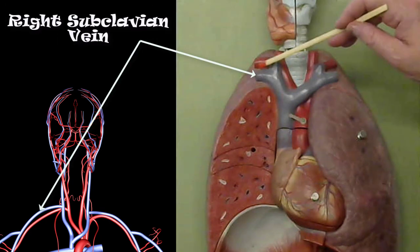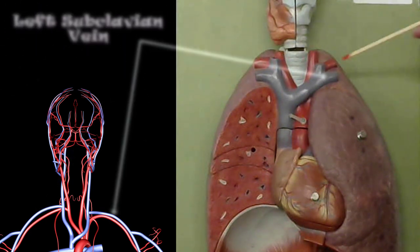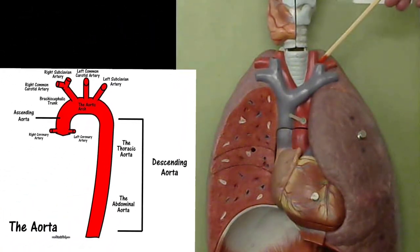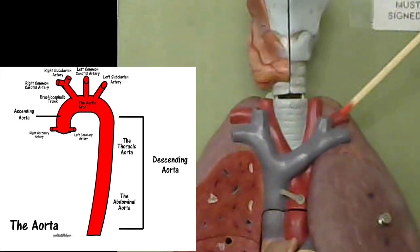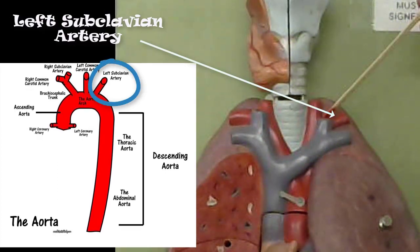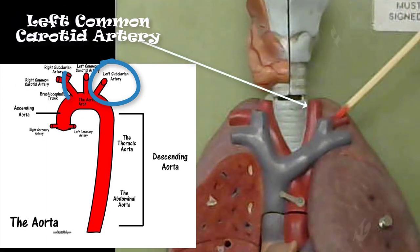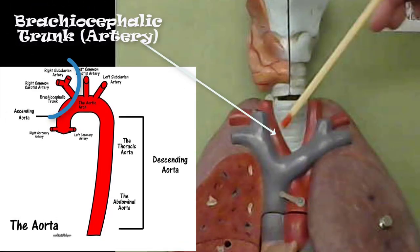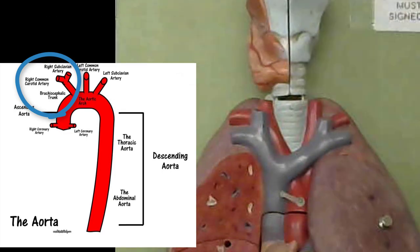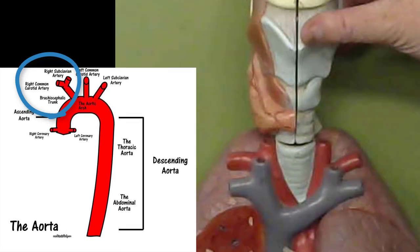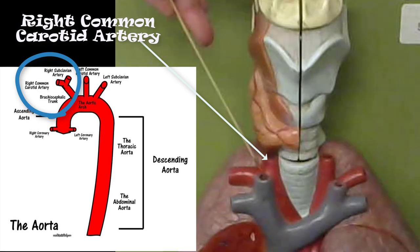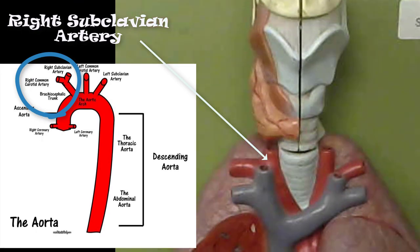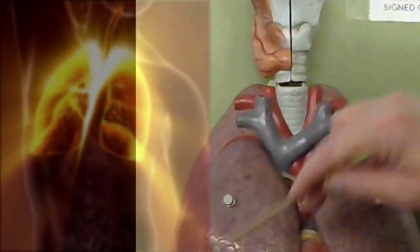The right subclavian vein and the left subclavian vein. We can also see the arteries coming off of the aortic arch. Here this is the left subclavian artery, the left common carotid artery. This is the brachiocephalic trunk, which branches off to form the right common carotid artery and the right subclavian artery.